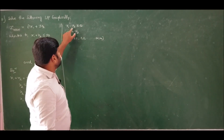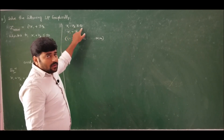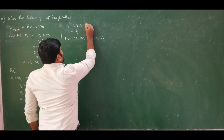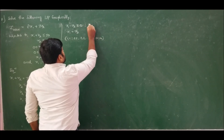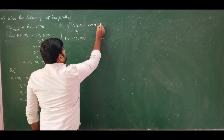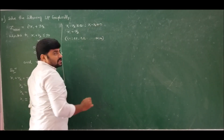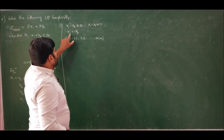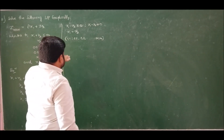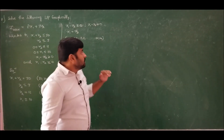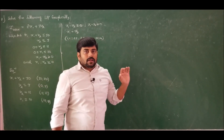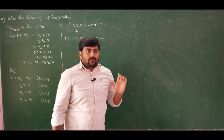Now, how to represent x1 - x2 ≥ 0: rearranging gives x1 - x2 = 0, from which x1 = x2. We construct the line from this equation. Let us first plot the line and then discuss how to indicate the direction and find the feasible region for problem number 11.